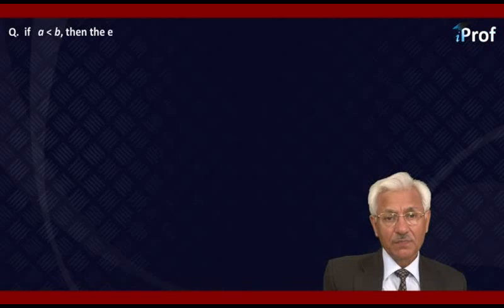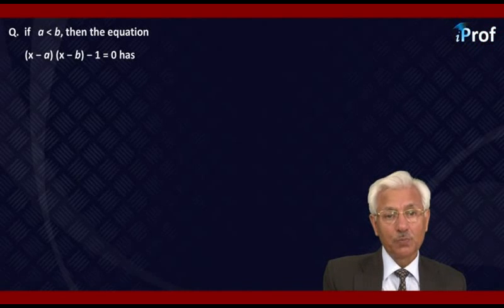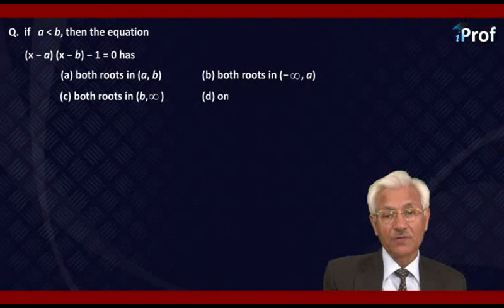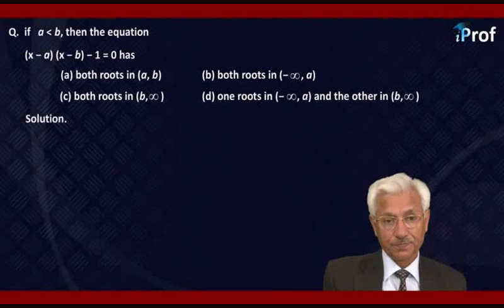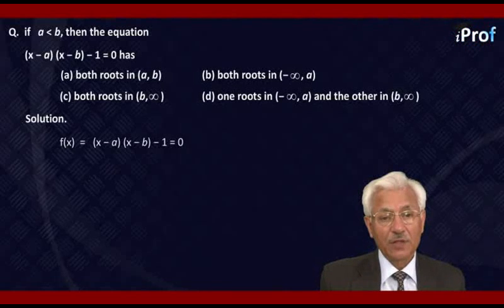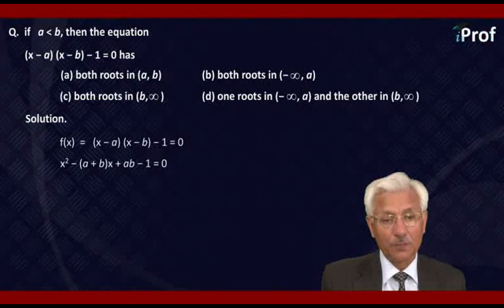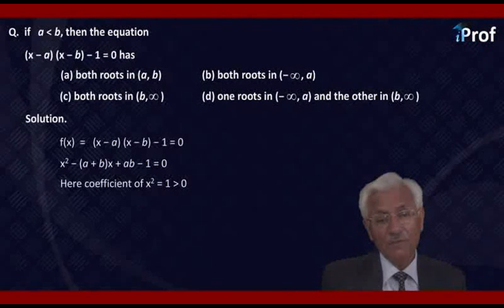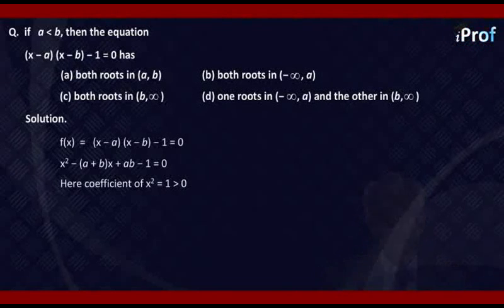If a < b, then the equation (x - a)(x - b) - 1 = 0 has: both roots in (a, b); both roots in (b, ∞); one root in (-∞, a) and the other in (b, ∞). Let f(x) = (x - a)(x - b) - 1. The quadratic becomes x² - (a + b)x + ab - 1 = 0. The coefficient of x² is 1, which is positive.